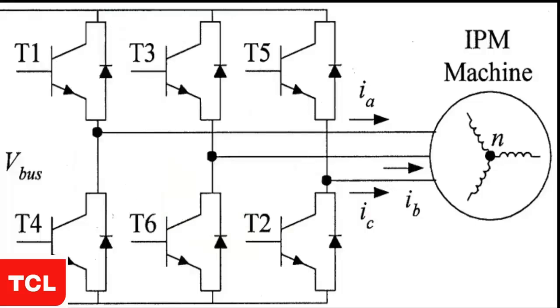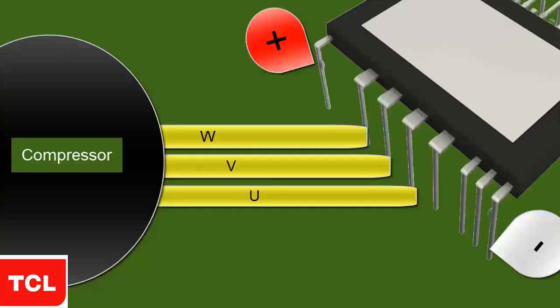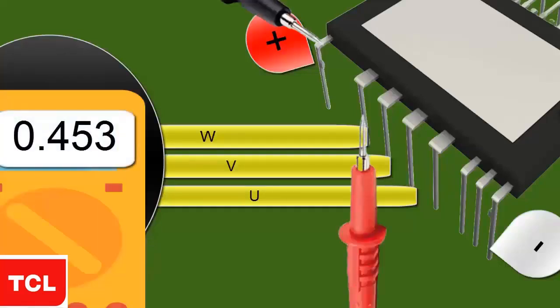Place the black probe of the multimeter on the positive input of the IPM electronic circuit. Use the red probe to measure the points UVW.